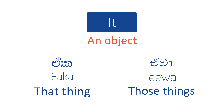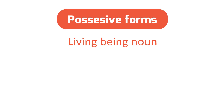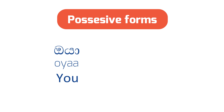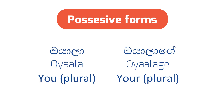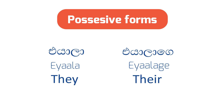You can learn more about those two words from the this and that video. Now let's look at the possessive forms. You can make a living being noun into a possessive form by adding ge to it — this works for about 99% of words, but only with living beings. For example: oya becomes oyage meaning your; ea becomes eage meaning his or her; eaala becomes eaalage meaning their.